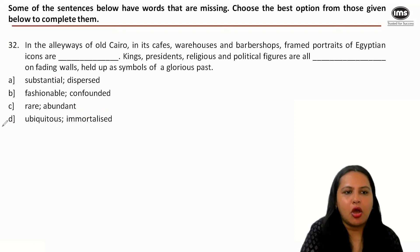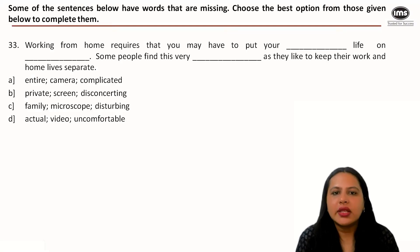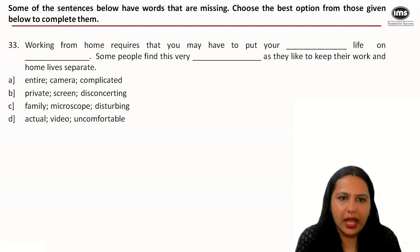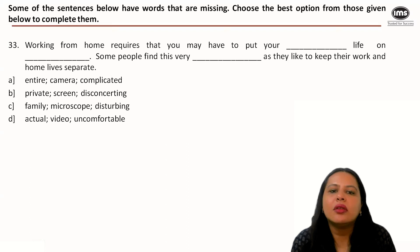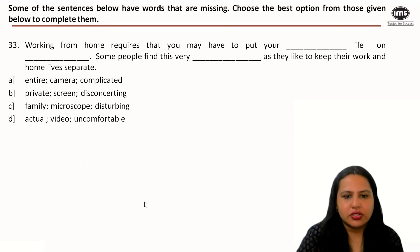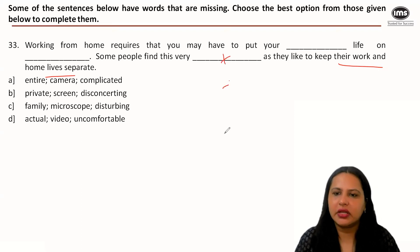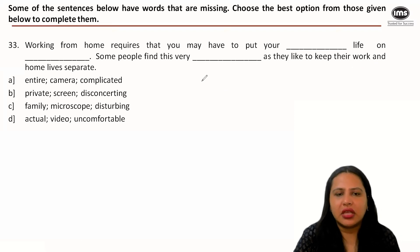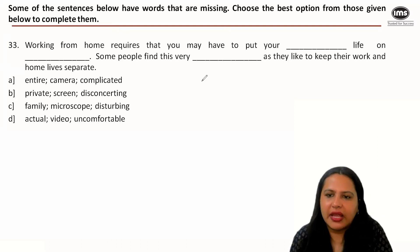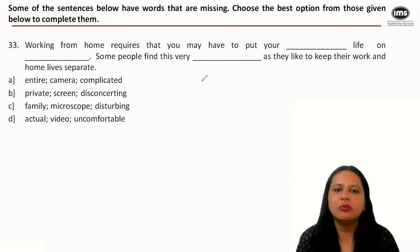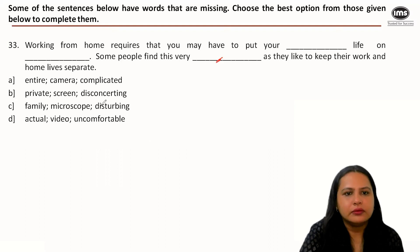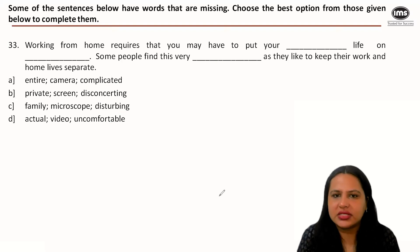Question five: 'Working from home requires that you may have to put your dash life on dash. Some people find this very dash as they like to keep their work and home life separate.' Since the person wants to keep work and home life separate but is forced to work from home, this situation is negative. All four options — complicated, disconcerting, disturbing, and uncomfortable — are negative words, so we need to look more closely at the other blanks.